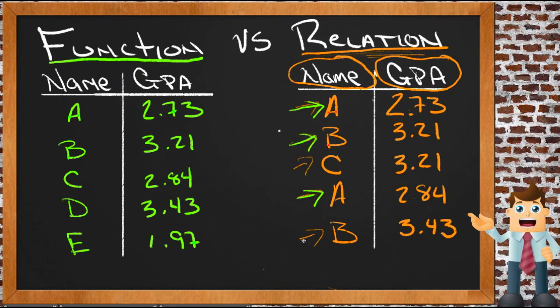Or if these are both the same student and these are both the same student, and one time they have one GPA and another time they have another GPA, we don't know that either. This is a relation but we can't really trust it. We can't trust that if we ask for a student whose last name starts with A, ask what their GPA is, that we'll always get the same answer.